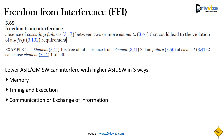When we look at dependent failures there are two aspects: cascading failure and common cause failure. Addressing cascading failure is called freedom from interference. When we implement measures for FFI, we are addressing half of the dependent failure aspects. Cascading failures in software can happen in three ways: memory, timing and execution, and communication or exchange of information.